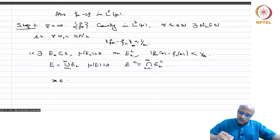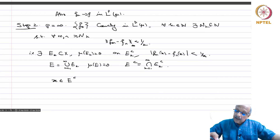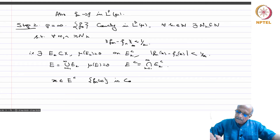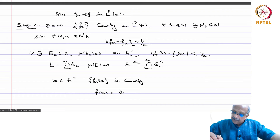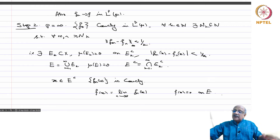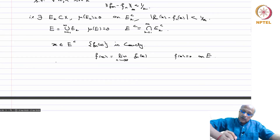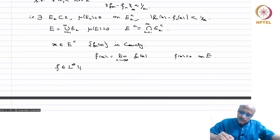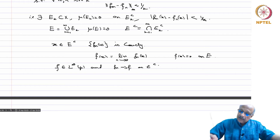If x belongs to E complement it is in every E_k complement and therefore f_n(x) is Cauchy. Take f(x) = lim_{n→∞} f_n(x) on E complement and f(x) = 0 on E. We do not care what we put on E since it has measure 0, and therefore f belongs to L∞(mu) and f_n converges to f almost everywhere.